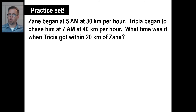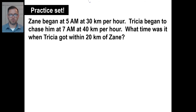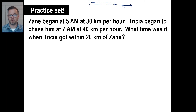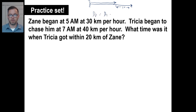Give your practice problem a whirl — draw a picture if you need to, it's very helpful. What time was it when Tricia got within 20 kilometers of Zane? Here's the picture: Zane is farther ahead and Tricia is behind. Zane's distance equals Tricia's distance plus 20. Writing as rate times time: R sub Z times T sub Z equals R sub T times T sub T plus 20.